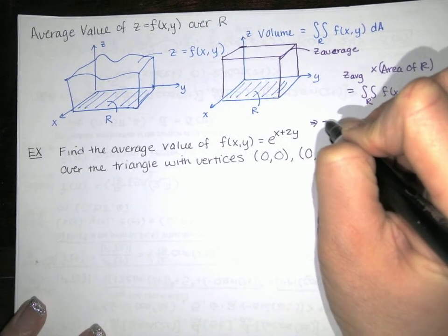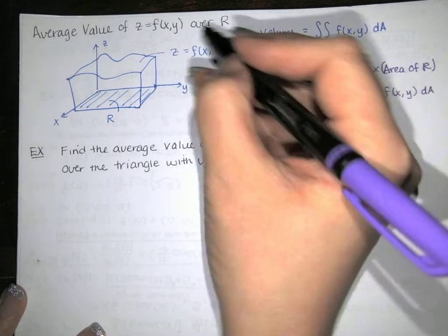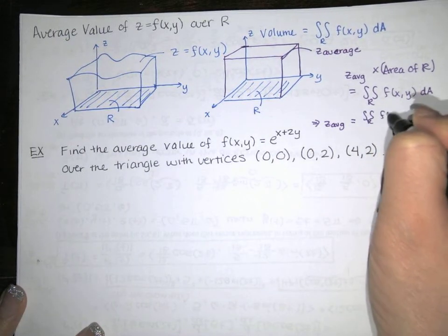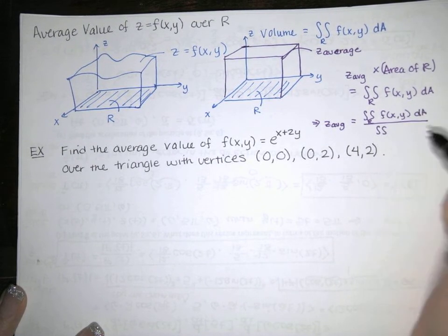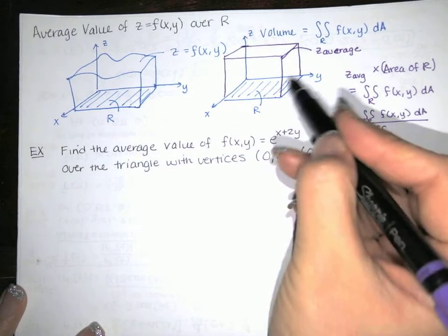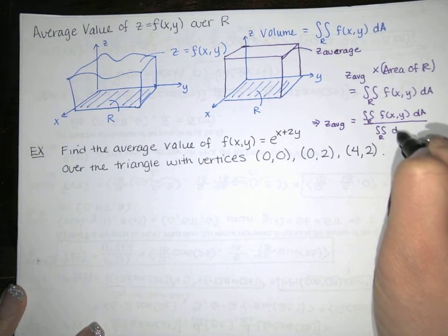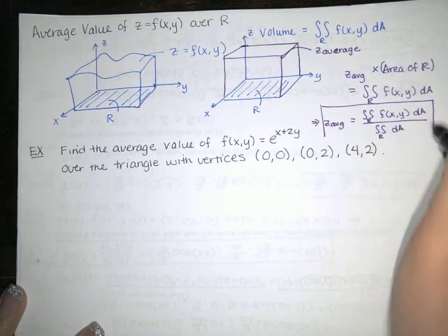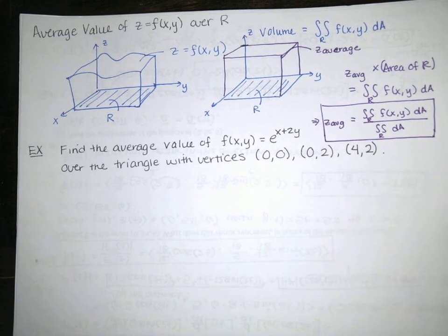So here's our formula for z average: the average value of z over the region R is the volume divided by the area of the region. That volume divided by the area gives us the height we need. The area of region R is just the double integral over R of dA. So it's volume divided by area, both represented as double integrals.